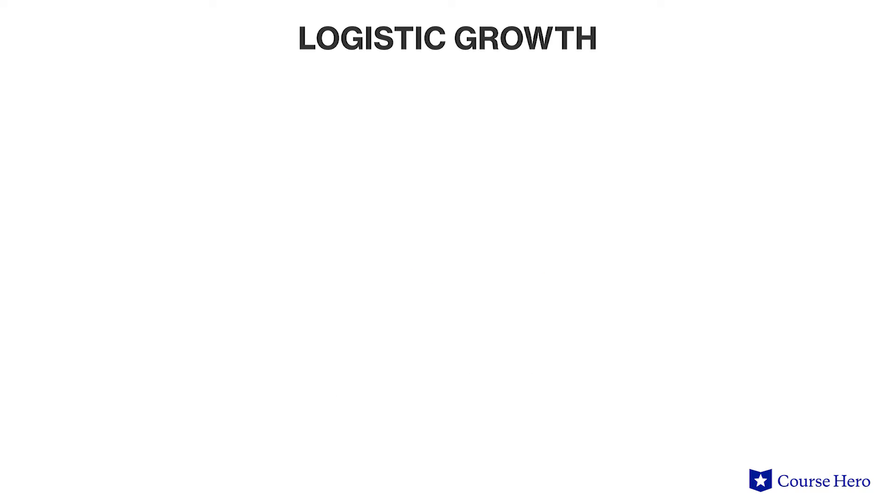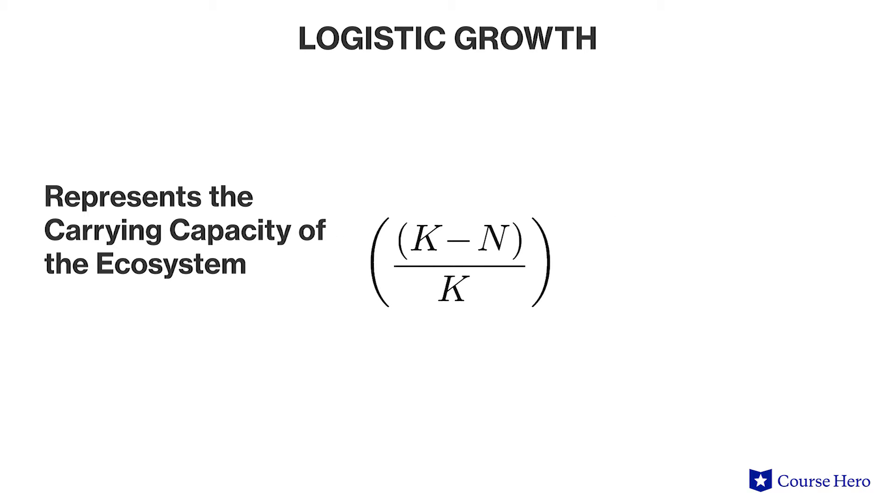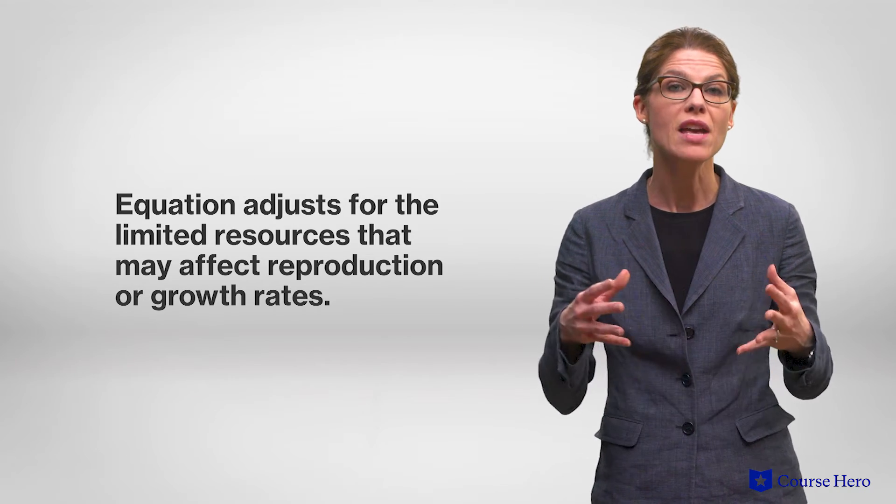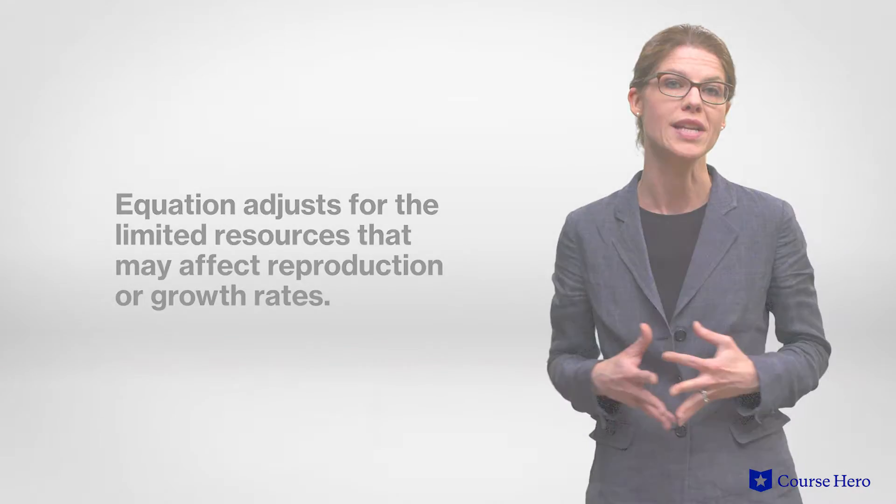The equation for logistic growth is delta n over delta t equals rn times k minus n over k. The term k minus n over k represents the carrying capacity of the ecosystem, and the term rn represents the population size. The equation adjusts for the limited resources that may affect reproduction or growth rates.